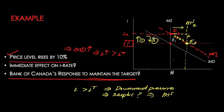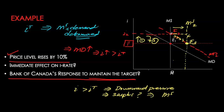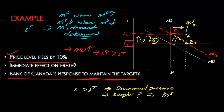This simple example reveals a very important outcome: central banks that have an interest rate target have a money supply that is demand-determined. As money demand increased and pushed up the interest rate, the Bank of Canada responded by increasing money supply to maintain the target. The Bank increases money supply when money demand goes up, and reduces it when money demand goes down — money supply always adjusts to maintain the interest rate target.